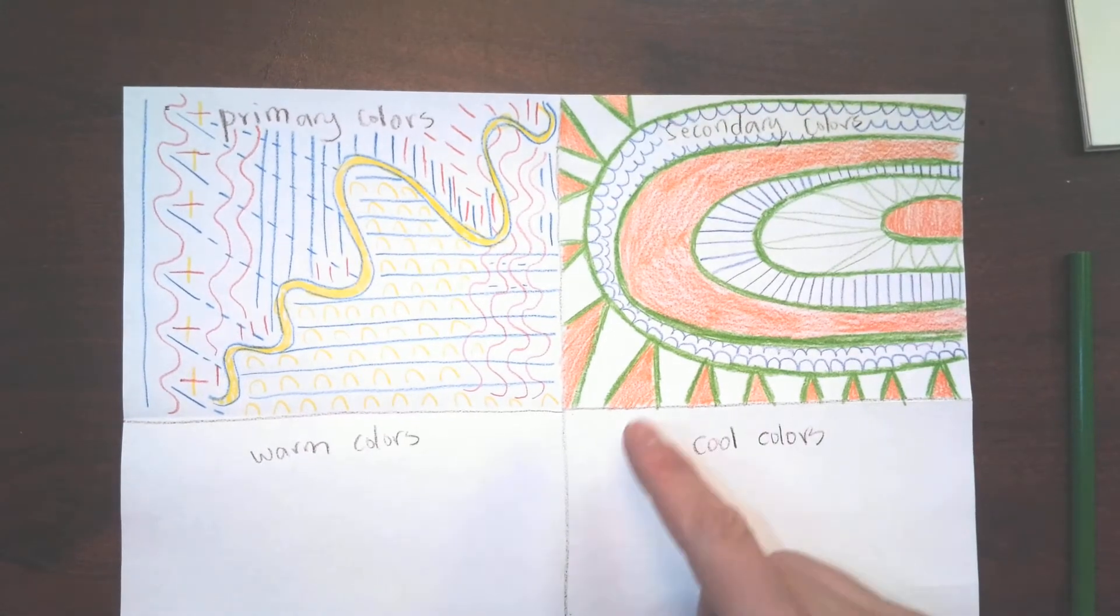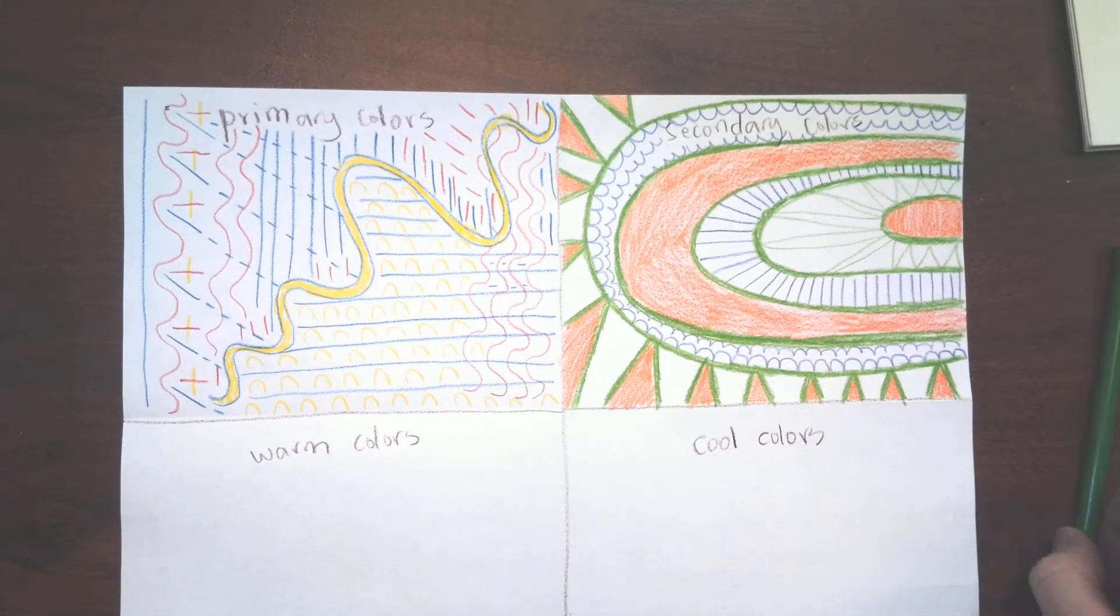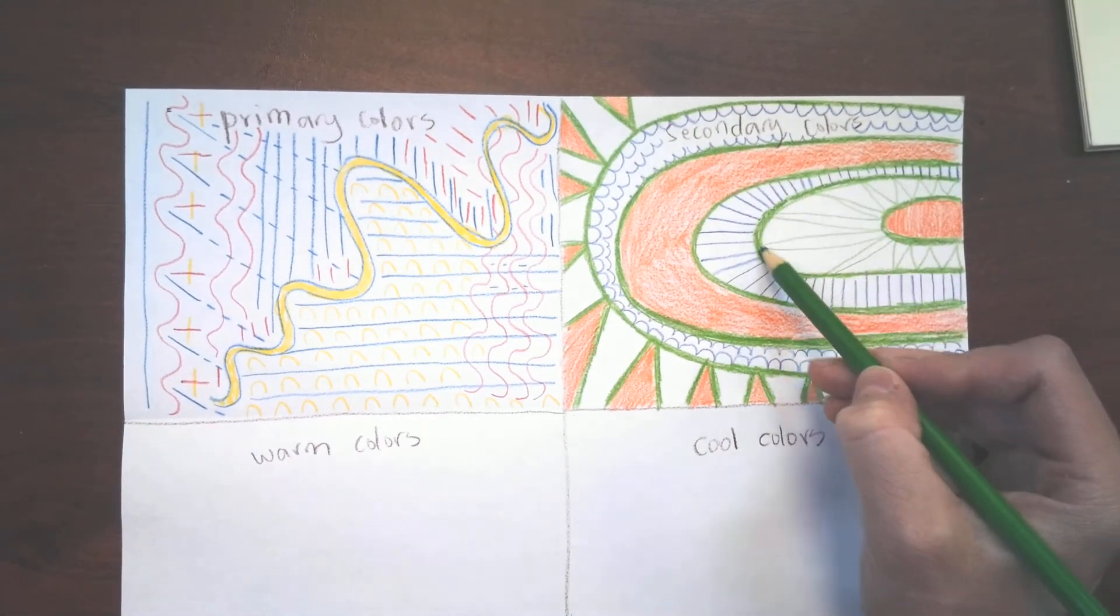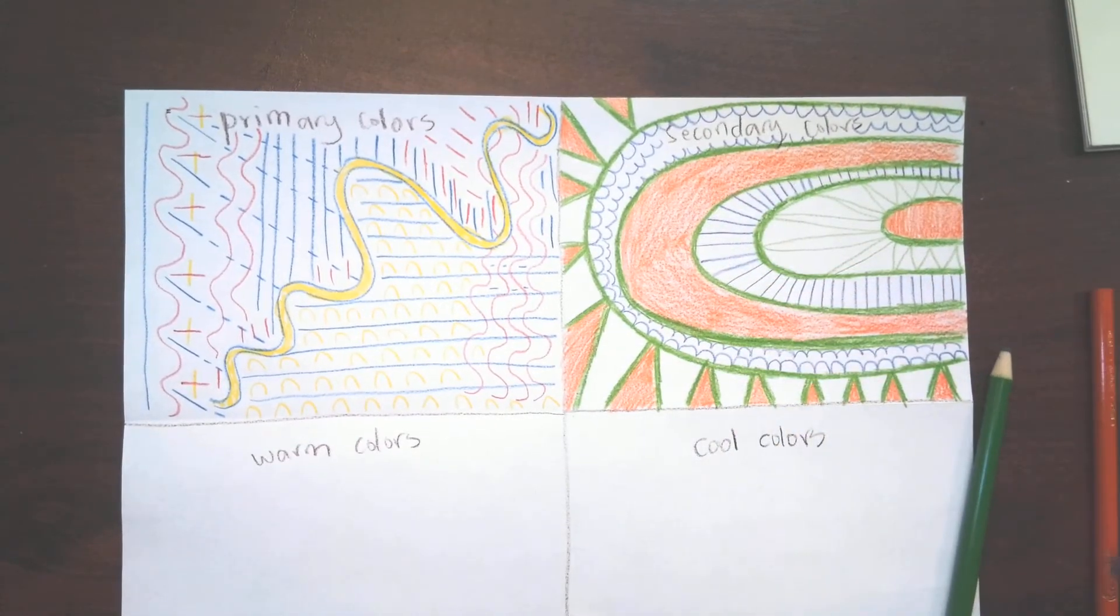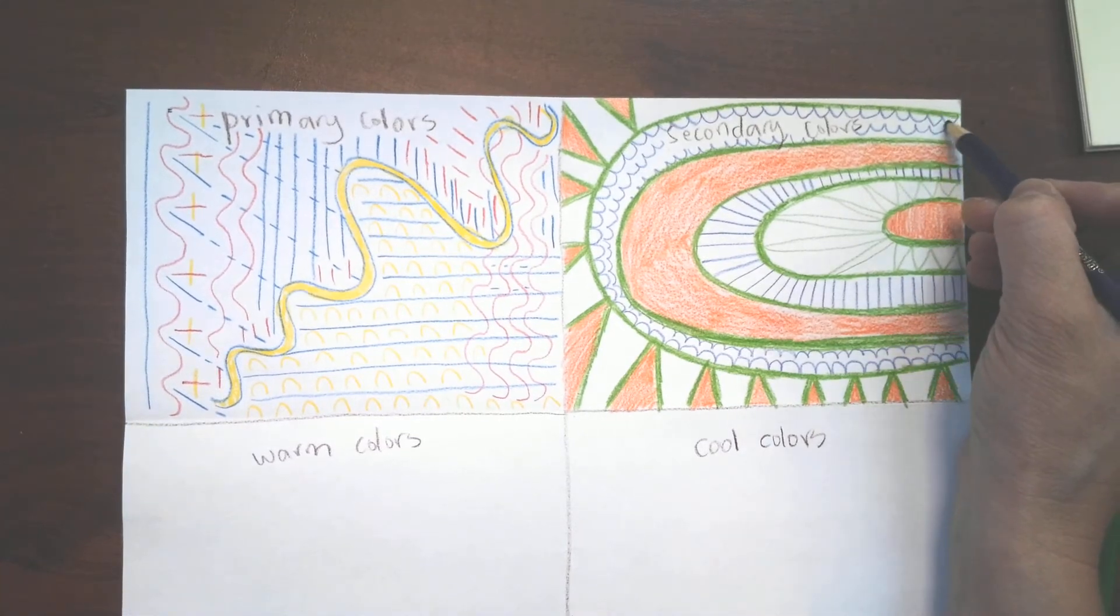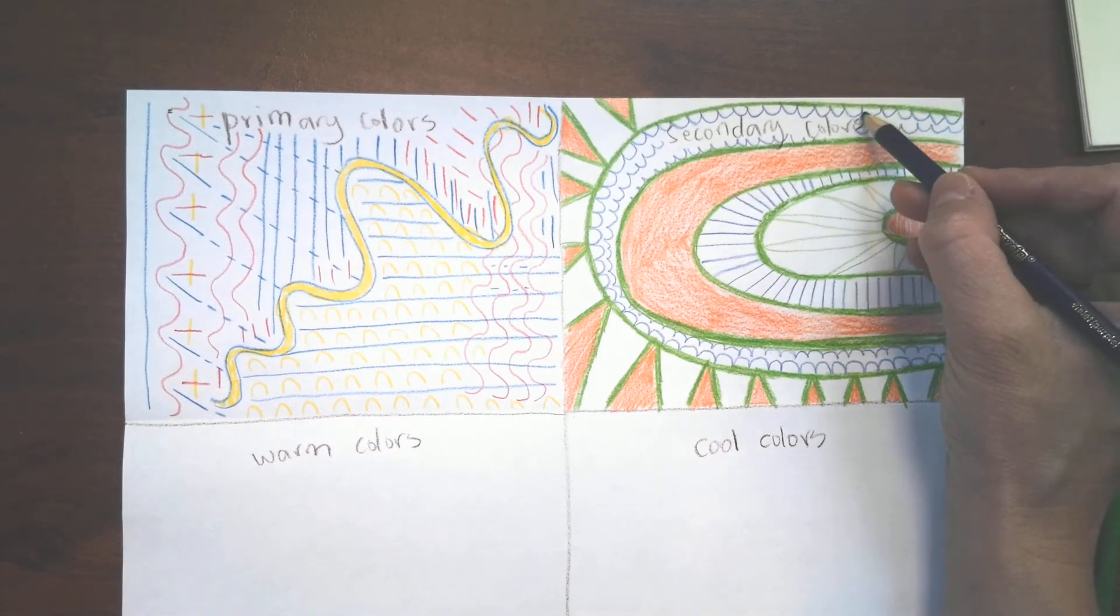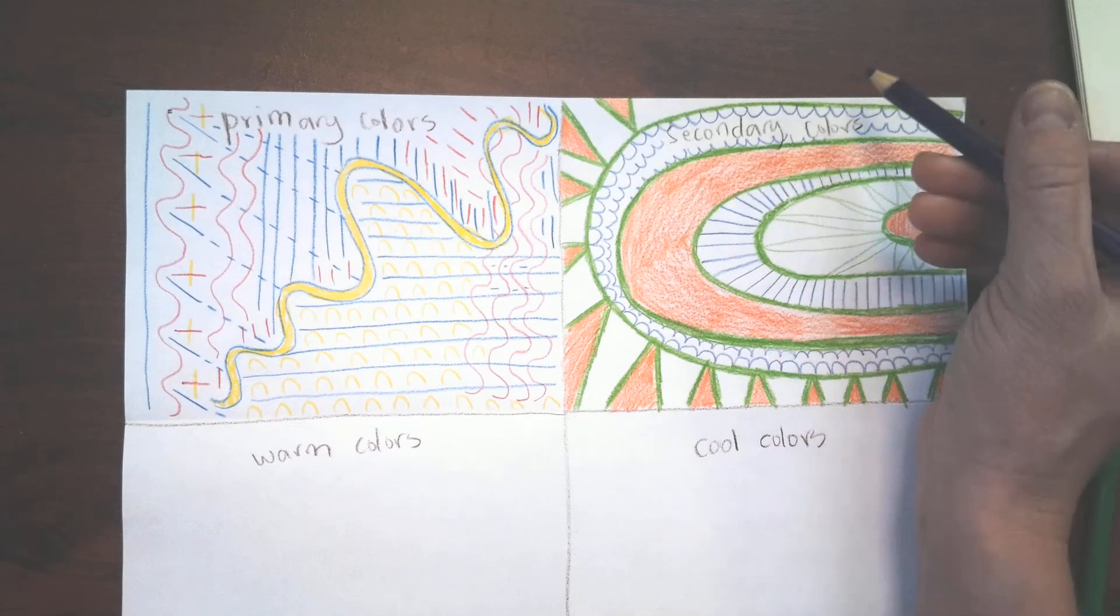Here's my artwork with my secondary colors. I have really thick curved lines with my green. Then with my purple, I drew lots of curved lines all connected to make bumpy lines.